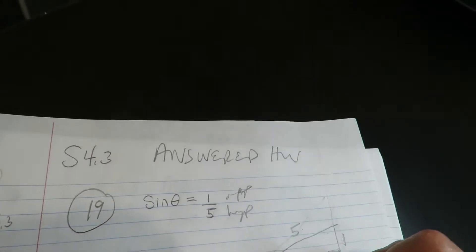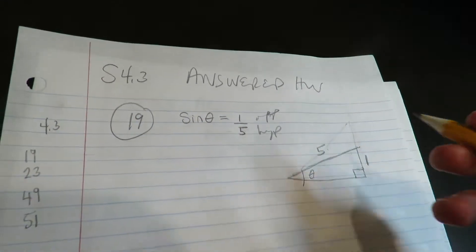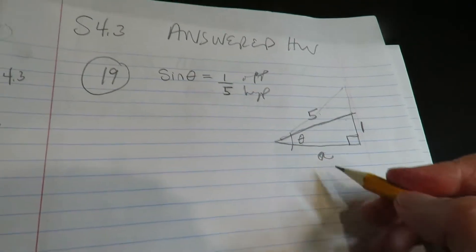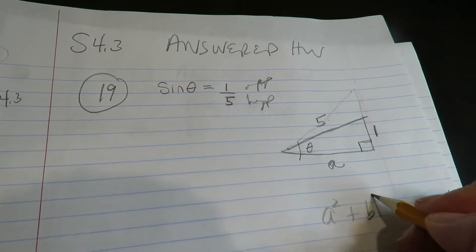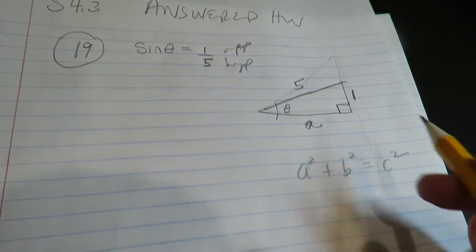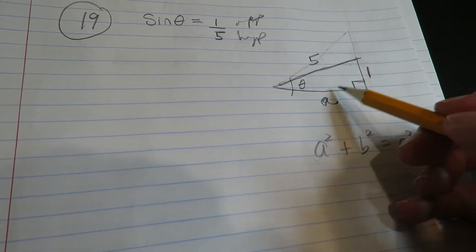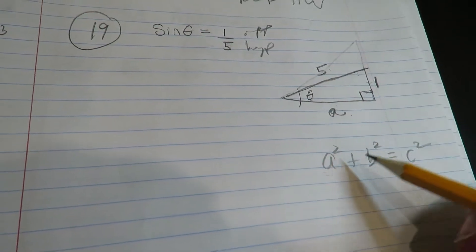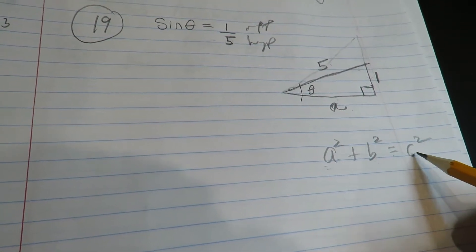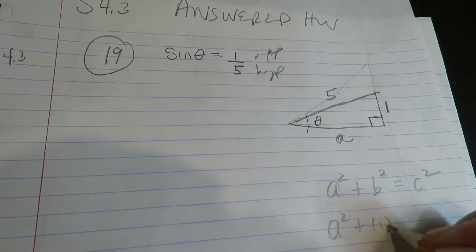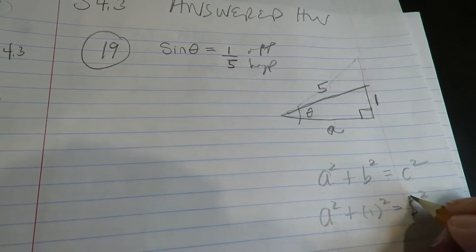All right, so you need to find this third side of this triangle, so that's when you use the Pythagorean theorem. I'll just call it A randomly. So I have A squared plus B squared equals C squared. These are your legs, meaning these two are the legs, which are the sides that are not the hypotenuse. So it's leg squared plus leg squared equals hypotenuse squared. So A squared plus 1 squared equals 5 squared.